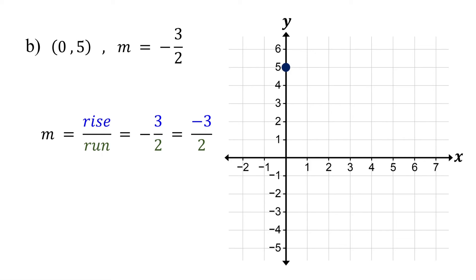So, the rise is 3 units down, and the run is 2 units to the right. Now, starting from the point, move down 3 units. Then, move to the right 2 units and plot the second point.